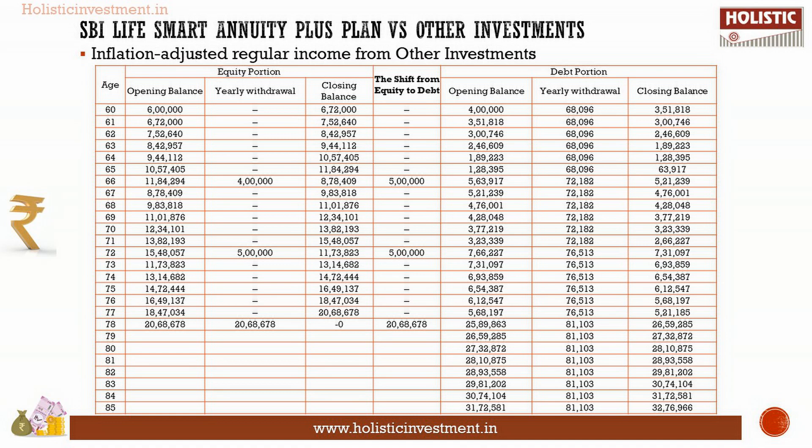The debt portion is refilled from equity every six years, and every six years your annual withdrawal increases by 6% to combat inflation. This strategy helps you cope with inflation during your post-retirement period. At the age of 78, the equity portion is fully shifted to debt, which can be done according to your risk-taking capacity. Even when the entire corpus shifts to debt in this process, you can be assured that the corpus outlives you.